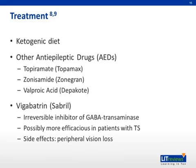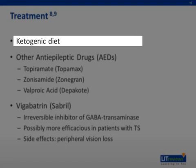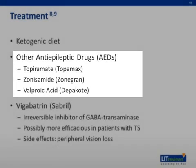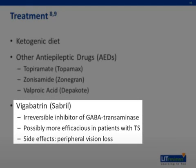Treatment continued. The ketogenic diet has been used both as a first-line therapy and in cases of ACTH failure. While it may be an effective treatment, it requires significant dietary modification and monitoring, which is often challenging, especially in infants and toddlers. Other antiepileptics are also used to treat infantile spasms, typically as second-line agents. Studies have shown that Topamax and Zonegran as well as Depakote may help reduce spasm frequency. Vigabatrin, which is an irreversible inhibitor of GABA transaminase, is another potential AED. It has been shown to be especially efficacious in patients with tuberous sclerosis. However, treatment with vigabatrin must be closely monitored as patients may develop irreversible peripheral vision loss.